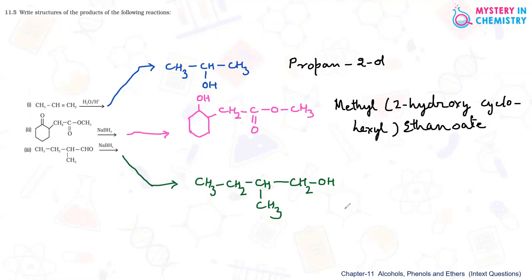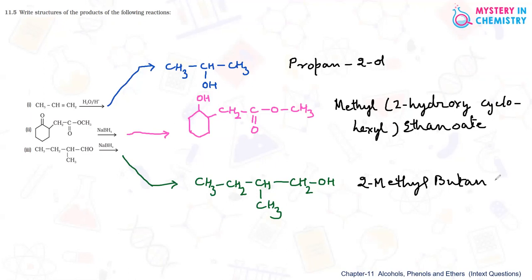The name of the third compound is simple. It is butanol, but at the second carbon atom a methyl group is present, so it is 2-methylbutan-1-ol.